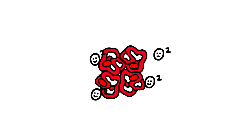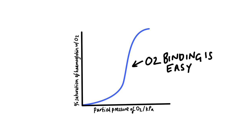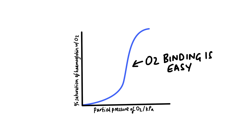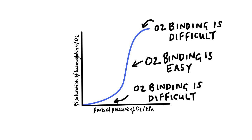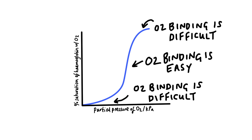But then, as the hemoglobin becomes more saturated, it is harder for the oxygen to bind to it. Steep sections of the dissociation curve are where O2 binding is easy, since hemoglobin has a high affinity, but the shallower sections are where O2 binding is difficult.